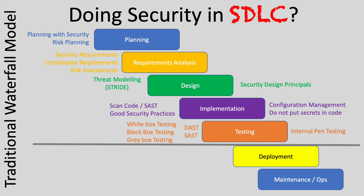White box testing is testing while you know information about the code. Black box testing is when you don't know anything about the system or code. Gray box testing is a combination — somewhere in the middle. Remember, testing doesn't have to wait until implementation is completed; it can actually be an ongoing activity and run as a parallel task alongside implementation.